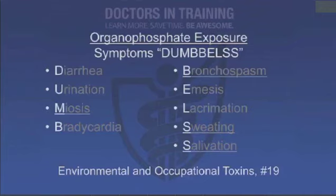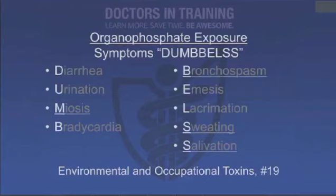The mnemonic for organophosphate symptoms is DUMBBELLS: Diarrhea, Urination, Miosis (small pupils), Bradycardia, Bronchospasm, Emesis, Lacrimation, Sweating, Salivation. Basically think of fluids coming out of every orifice of your body — you're pooping, peeing, throwing up, sweating, crying.